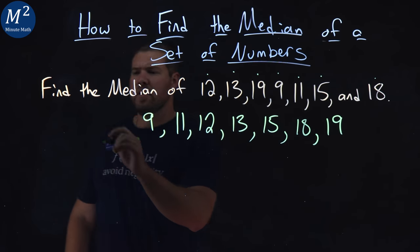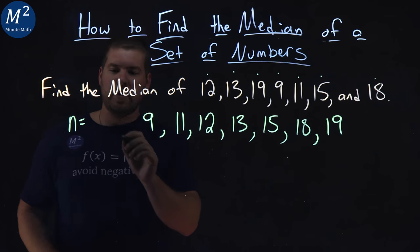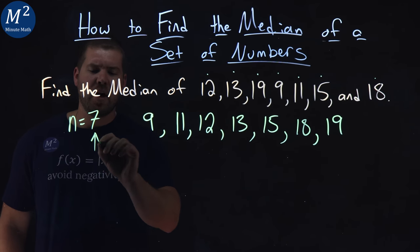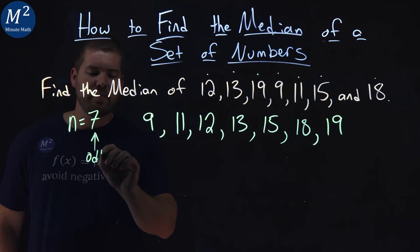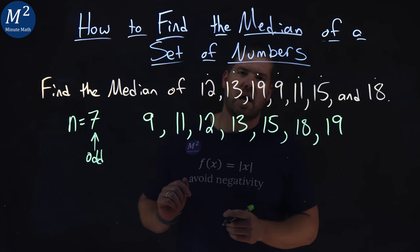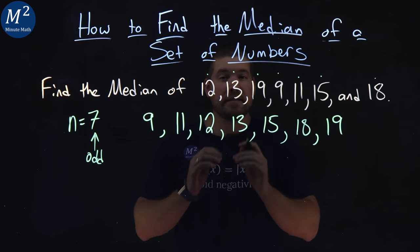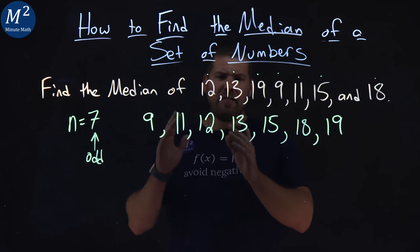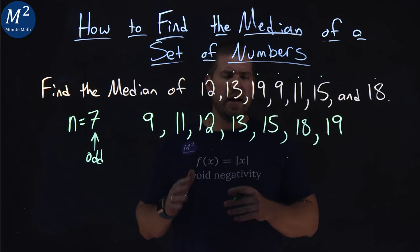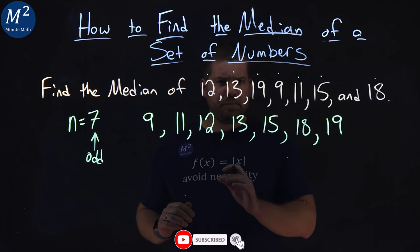Speaking of 7, the amount of numbers that we have is 7 — that is odd. It's an odd number, not even. I like it when it's odd because we'll have a direct middle number. If it's an even number it gets a little tricky, but we're just going to do it with an odd count right now.